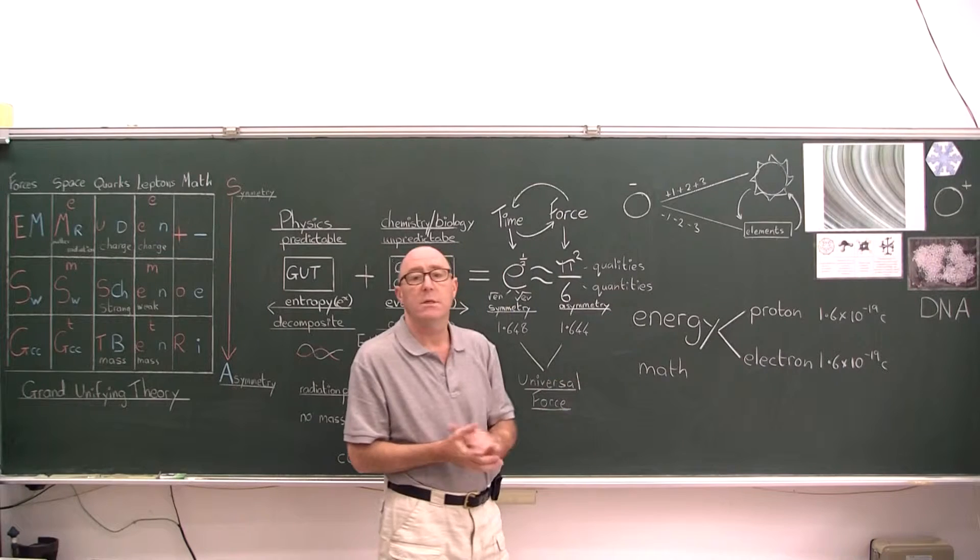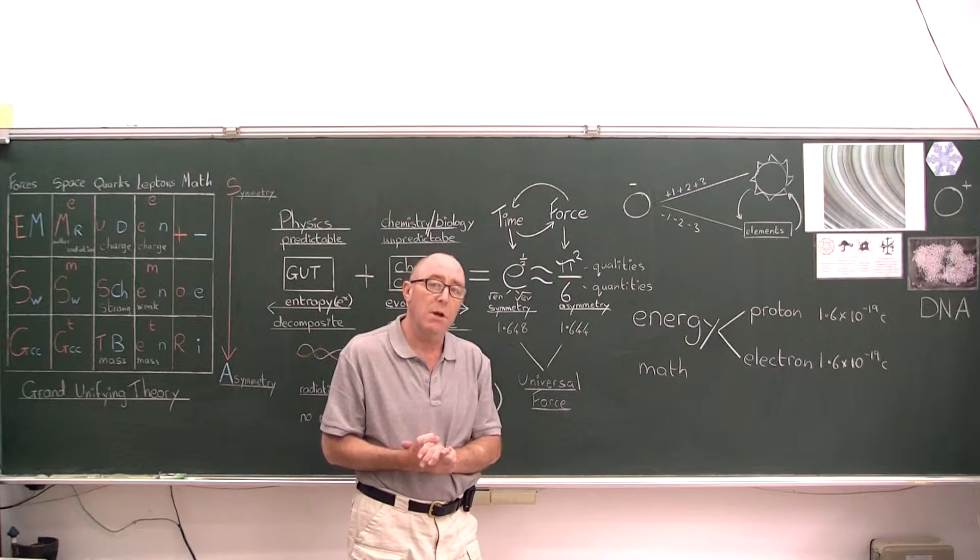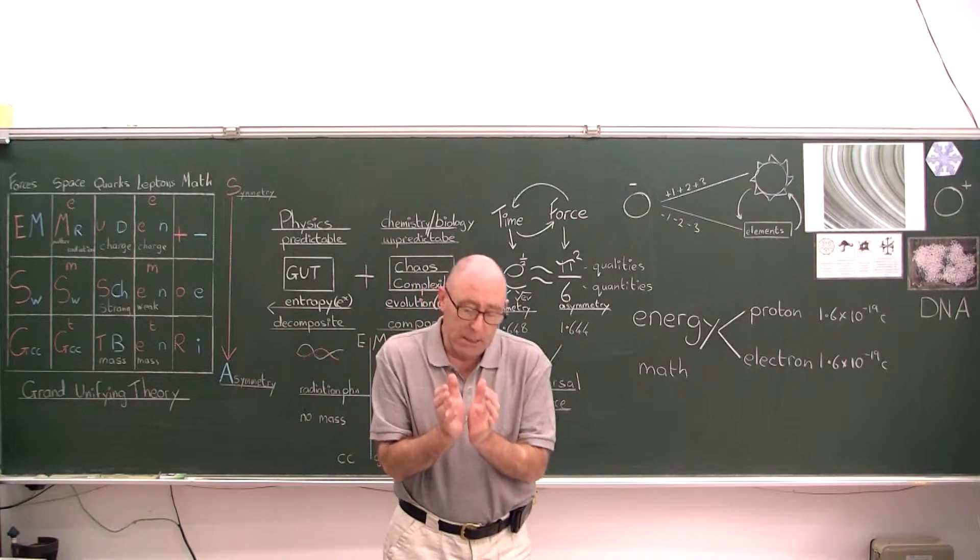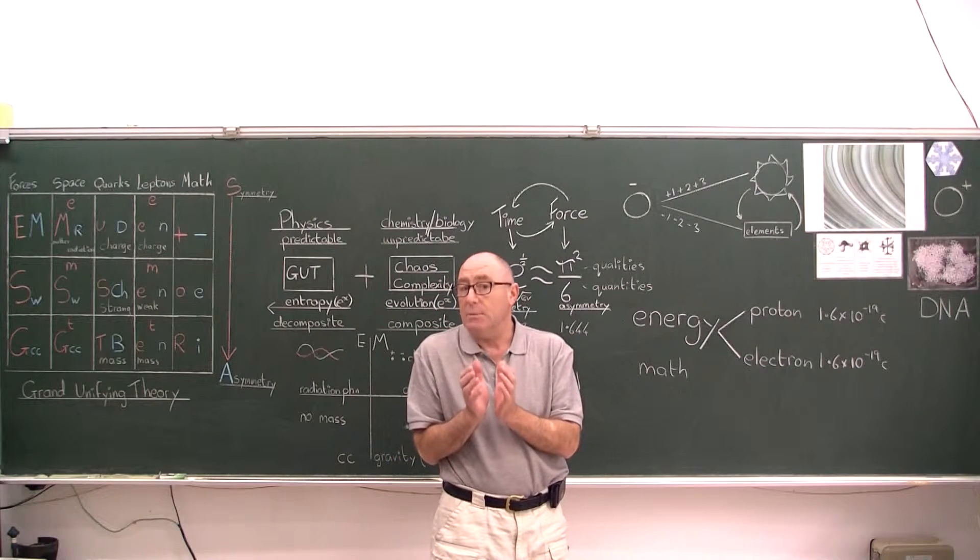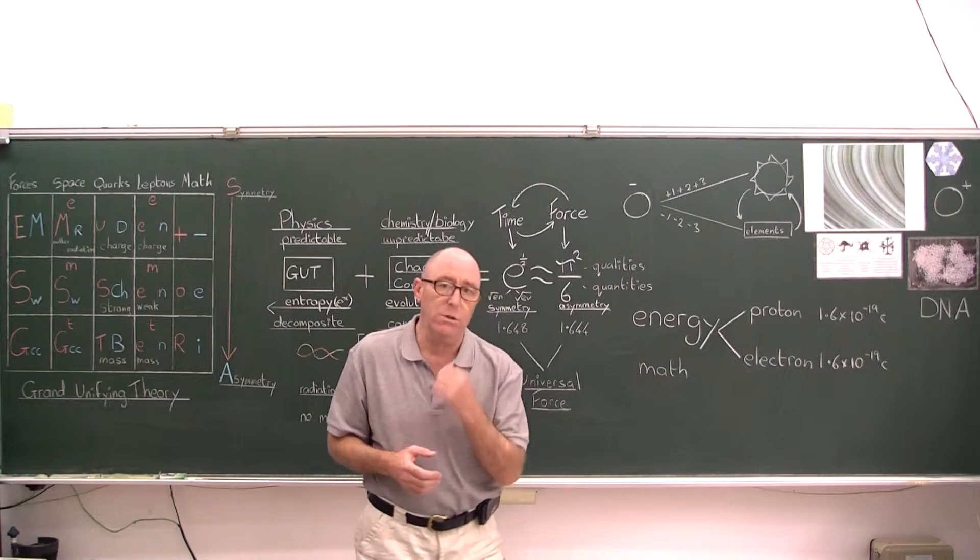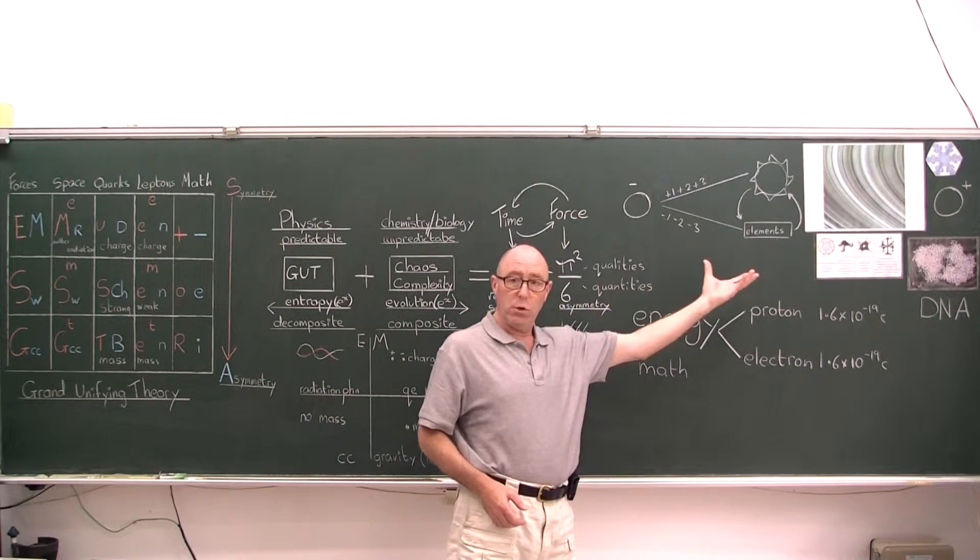The first two are prime numbers. We know that all of mathematics is built upon prime number theorem. The relationship between the first prime number, which is two, which is even, symmetrical, and three, which is asymmetrical. And the difference between them, the force, is one.